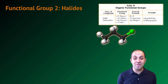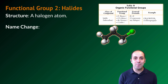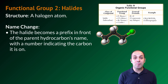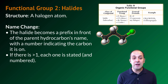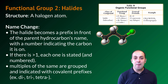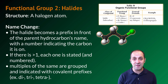Our second functional group and the first one that we find on reference table R are the halides. The structure is simply a halogen atom. When we add a halogen atom to a hydrocarbon, we do have to change the name. The halide becomes a prefix in front of the parent hydrocarbon's name and we use a number to indicate the carbon that it's on. If there's more than one, each one is stated and numbered, and multiples of the same are grouped with the same covalent prefixes that we used with our alkyl groups. So the rules for alkyl groups and halides are very similar — it's just that the functional groups themselves are different.